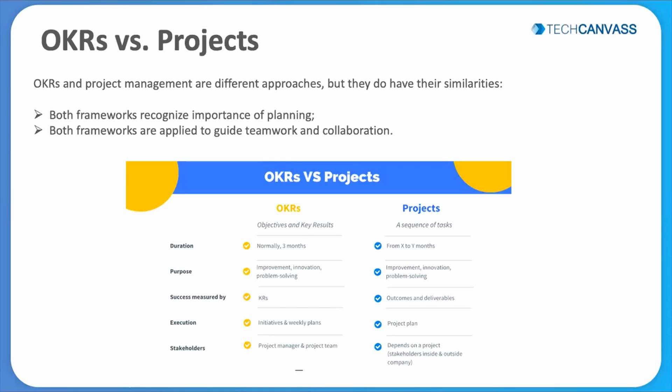Both of them are going to guide you towards teamwork and collaboration. Now let's look into the differences. In OKR, the duration is normally three months, while a project can vary — it can be one month, six months, or any other duration.